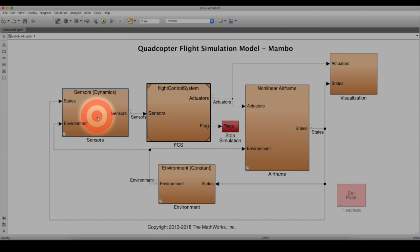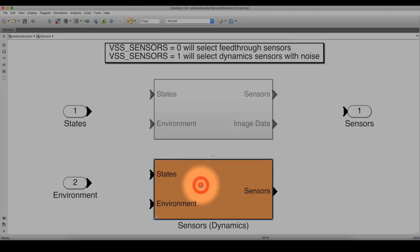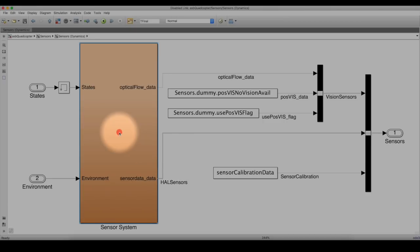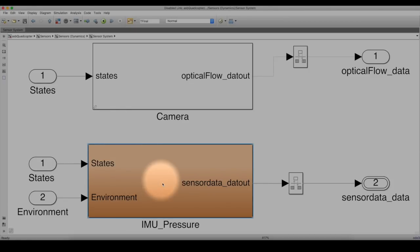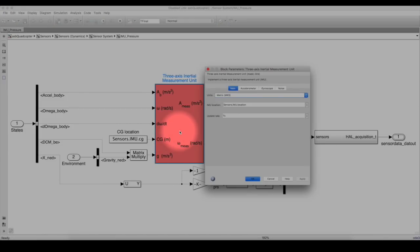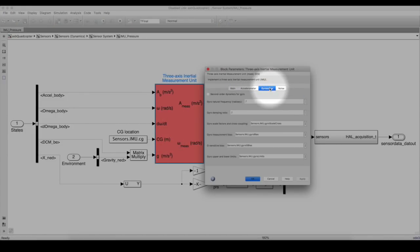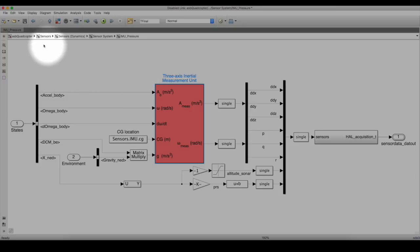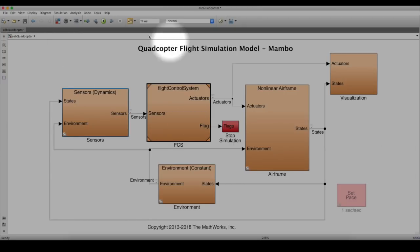So now that we have a model that we like, we can use it for things like safely simulating a failure and then seeing how the system does. For example, we can go back to the sensor block and into the IMU model and change the gyro bias. Let's say that we estimated the bias poorly and it's really three times worse than we expect.